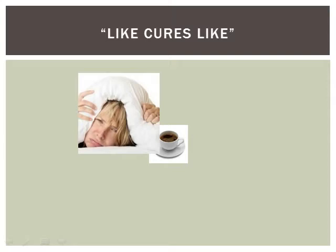Like cures like is the main principle of homeopathy — a substance that causes symptoms in a healthy person will cure those symptoms in a sick person. For example, coffee as a homeopathic remedy is Coffea cruda. If you drink a cup of coffee, it makes it hard to sleep. But if you take it homeopathically, Coffea becomes a remedy that cures insomnia. In a healthy person, coffee keeps you awake, so if you're having trouble sleeping, homeopathic coffee is going to help you sleep. That's like cures like.